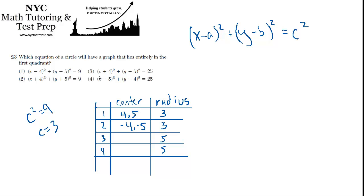Choice 3 is the same as choice 2 — the center is at (−4, −5). Choice 4 has its center at (5, 4). So choices 2 and 3 we can throw away because their centers are in the third quadrant — negative 4, negative 5. So 2 and 3 are gone.